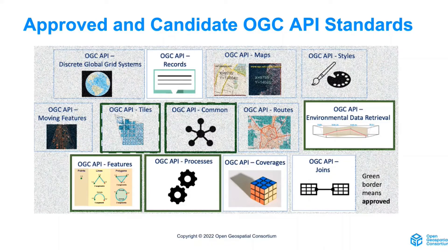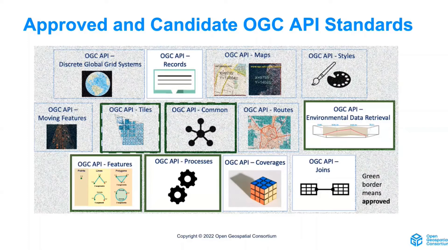As you can see, they are in different stages of approval, and I'll show you a roadmap later on. The ones that have a full solid green border mean that at least one part — one or more parts — were already approved, so they are a standard. The others are candidate standards. Even if the OGC APIs are quite recent, some of them are already standards, with one or in some cases more than one part approved.